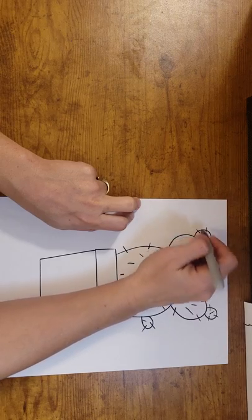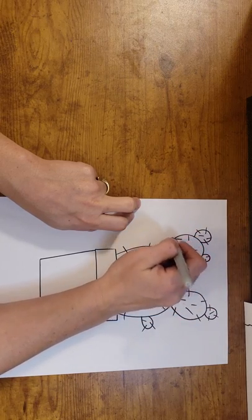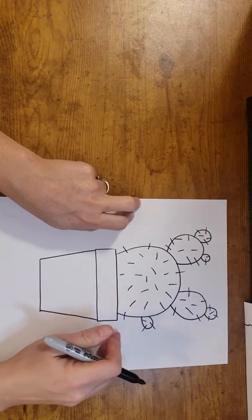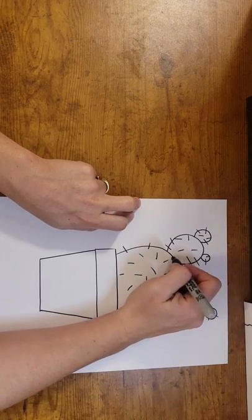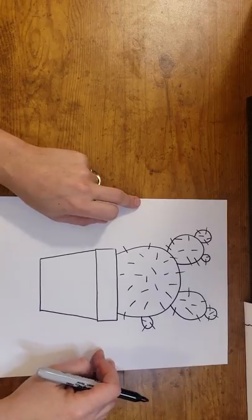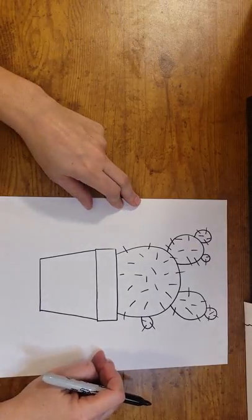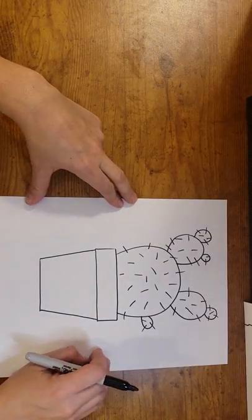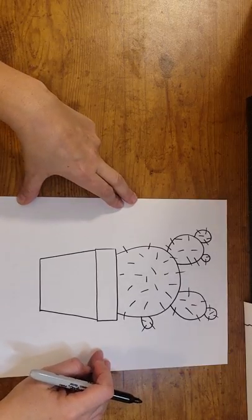You might have some close together, some far apart. I think that looks pretty good. I might add one right here. Now we have a cactus. We can add a background, and for my background this evening I'm going to add a sun and maybe even make it look like it is a sunset.